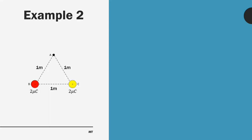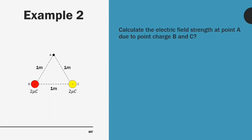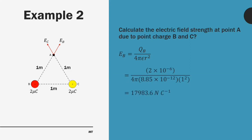Next, we have two point charges B and C which are both positive two microcoulomb. We're going to calculate the electric field strength at point A due to point charges B and C. Since both are positive, they will apply electric field strength in the increasing R direction. Applying the formula for point charge B, substituting all values, we get 17,983.6 newton per coulomb. For point charge C, it also exerts the same value since it is the same charge and also the same distance away from point A — also 17,983.6 newton per coulomb.